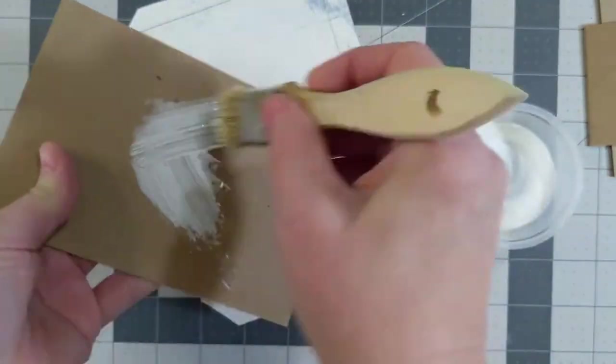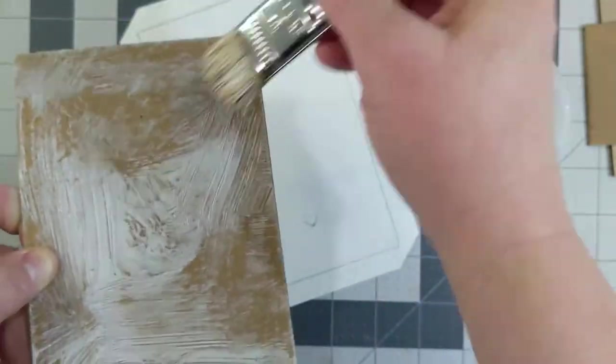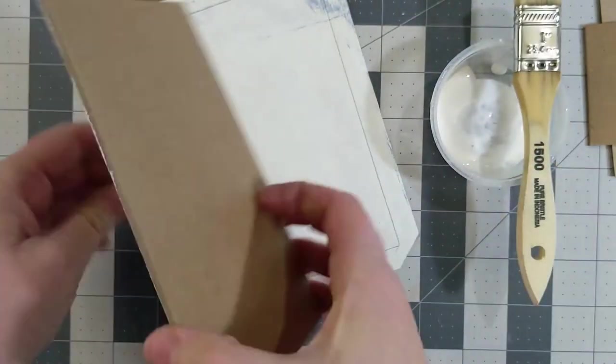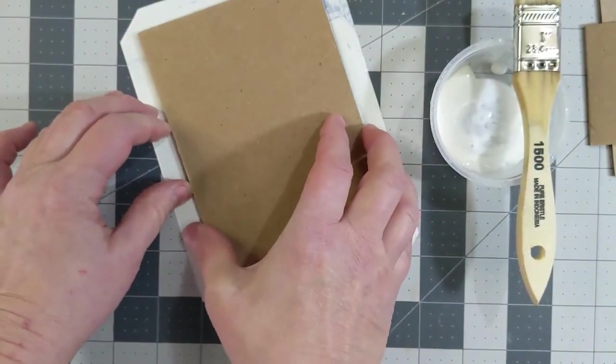Apply glue to your boards and then place it face down onto the paper. Smooth it down on both sides.